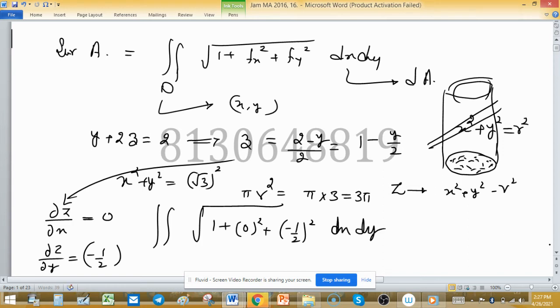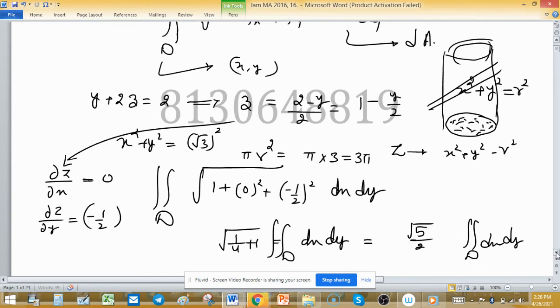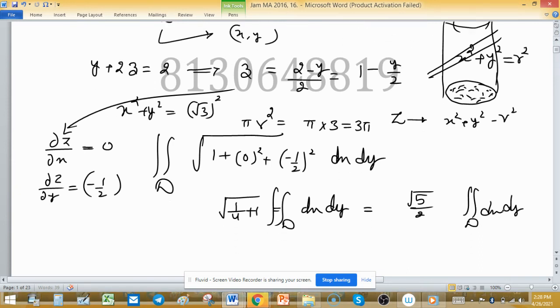dx dy, and xy is coming from the region or this disk d. So this value is 1 upon 2 squared, so 1 by 4 plus 1, and all these are in square root. Because this is free from x y, you can take it outside from the integral. So this is root 5 upon 2, and this is dx dy. dx dy means the area of the region or disk, and we already calculated 3 pi. So root 5 upon 2 into 3 pi, so the value is 3 root 5 upon 2 pi.